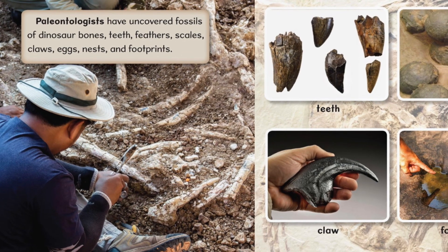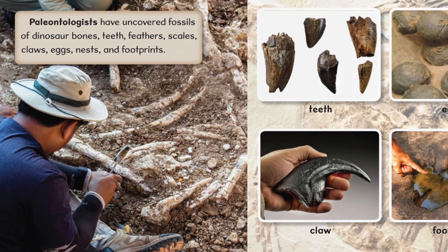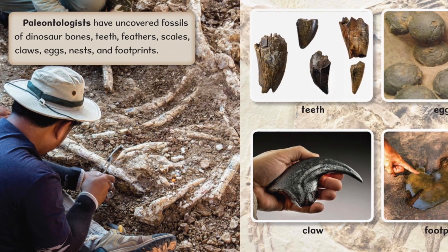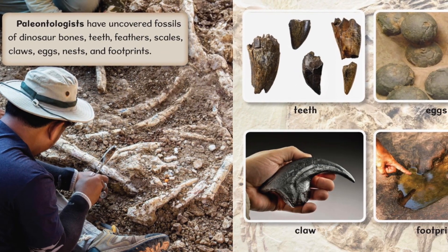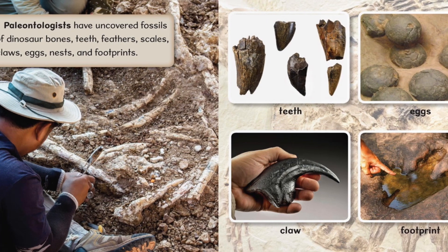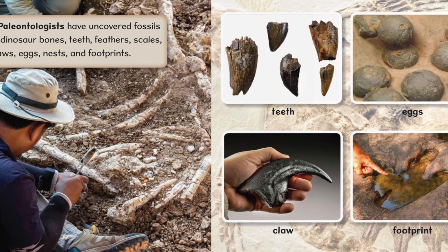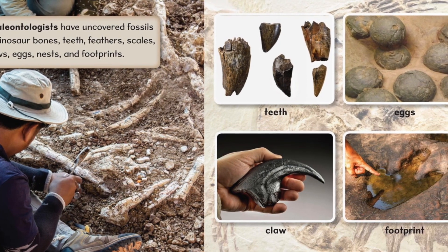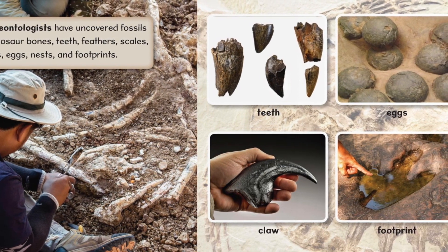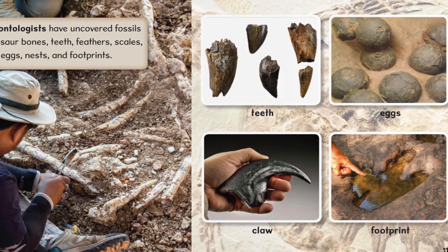Paleontologists have uncovered fossils of dinosaur bones, teeth, feathers, scales, claws, eggs, nests, and footprints.